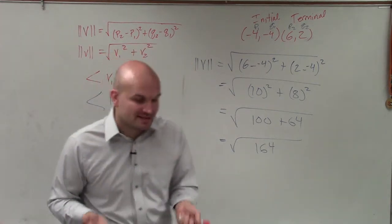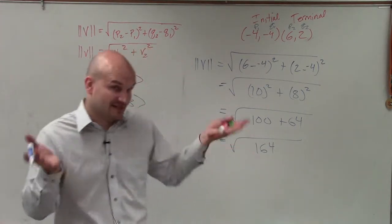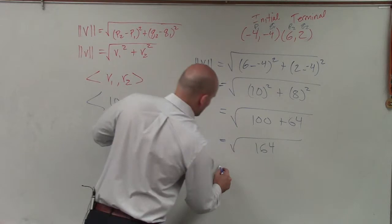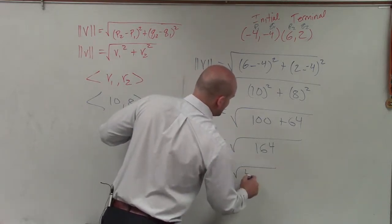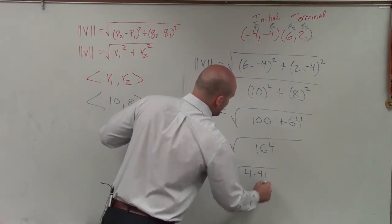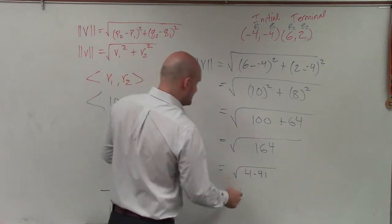Now I want to see, can I simplify this? Is there any square number that divides evenly into this? And when I did my work, I said, I can actually rewrite this as 4 times 41. Well, I can take the square root of 4. I cannot take the square root of 41.